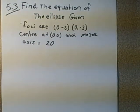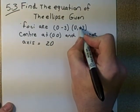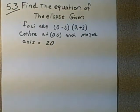So we look at the information that's given to us. It says the foci are at - this is supposed to be positive 3 here - 0, 3, and 0, negative 3, and the center is at the origin, and we have a major axis of 20.